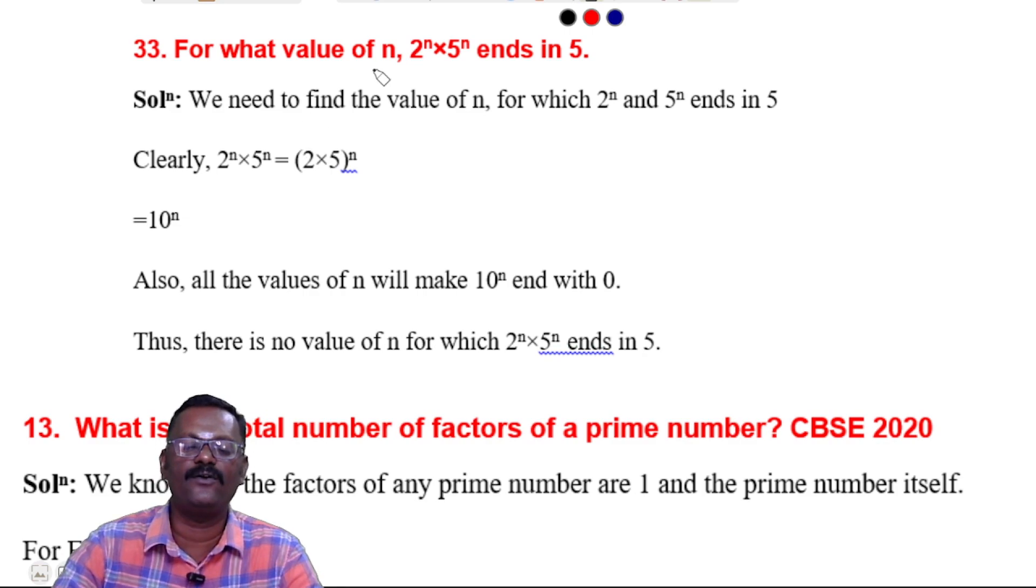Next question, 33rd: For what value of n, 2^n × 5^n ends in 5? We need to find the value of n for which 2^n × 5^n ends in 5. Clearly, 2^n × 5^n = (2 × 5)^n, that is equal to 10^n.